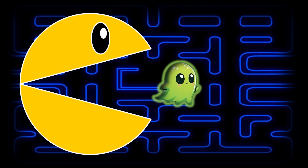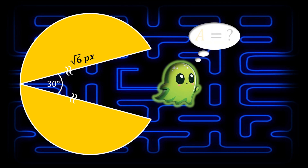This time the Pac-Man is chasing us, and his mouth is open at a 30-degree angle. The length of its upper and bottom jaws is exactly the square root of 6 pixels. If we lose the eye of the Pac-Man, the question is: can we somehow calculate this yellow shaded area? If you want to try this interesting problem yourself, you can pause the video right now and come back to check your solution.